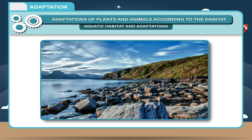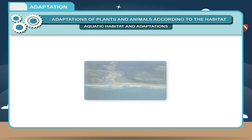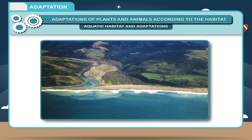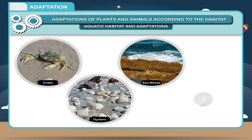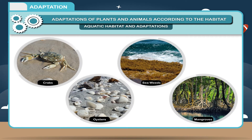Coastal Habitat refers to the regions where the sea meets land. There are a variety of coastal habitats that support different types of living organisms. Estuaries are coastal regions where a river or stream containing fresh water meets the salty water of the sea. These unique habitats are supported by organisms like crabs, oysters, seaweeds and mangroves.